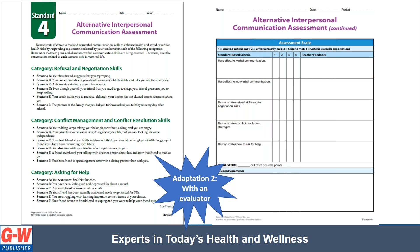Adaptation two would require the teacher to meet one-on-one with students to assess their verbal and nonverbal communication skills. The teacher will select one scenario from each category and the student won't know what scenario the teacher would choose ahead of time. Students would respond using effective verbal and nonverbal communication skills. We really wanted to provide different activities for different students, because while you may have the majority of your class doing one assessment, you may have one or two students where this assessment would work better for them.